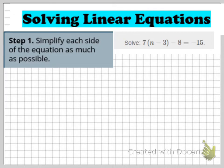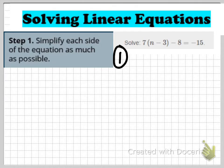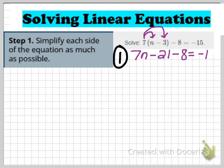When I look at this equation, on the right side all I see is negative 15 — that's already simplified. But on the left side, I see parentheses, so I know I'm going to have to distribute my 7. And that minus 8 is a constant I'll probably be able to combine after I distribute. So distributing the 7 gives me 7n minus 21 minus 8 equals negative 15.